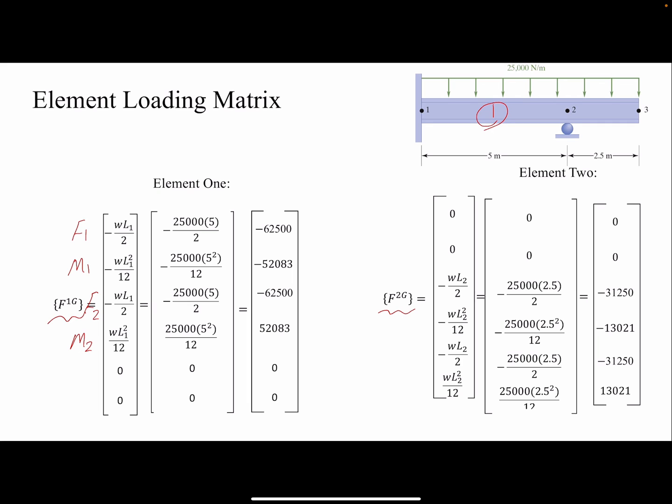These are the equations for the equivalent load on the first node, equivalent moment on the first node, and so forth. We're just going to replace it with the values that we have. w is 25,000, L1 is 5 meters divided by 2, and so forth. So we have our two loading matrices.